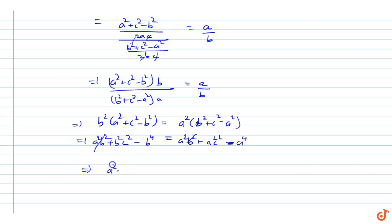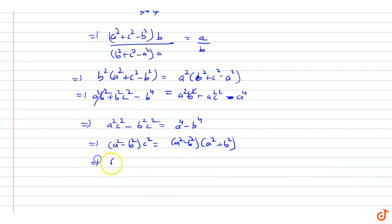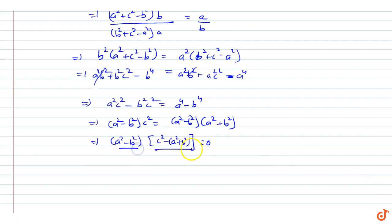Rearranging all terms to one side: a²c² - b²c² = a⁴ - b⁴. This gives us (a² - b²)·c² = (a² - b²)·(a² + b²). Taking (a² - b²) common: (a² - b²)·(c² - a² - b²) = 0.